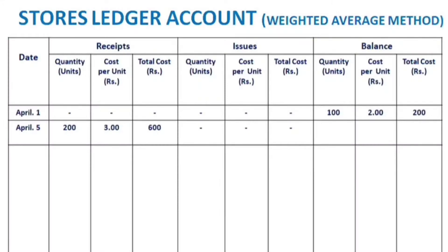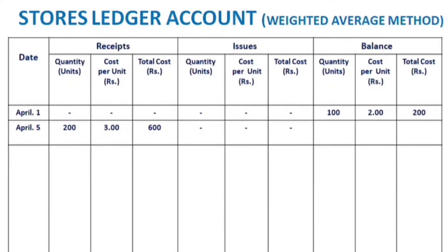In the weighted average method, unlike FIFO or LIFO, we consider both the quantity and the total cost. The opening balance quantity is 100 units and April 5th adds 200 units. So the total quantity in balance is 300 units, and the total cost is 200 plus 600, which equals 800 rupees.